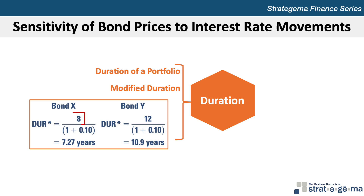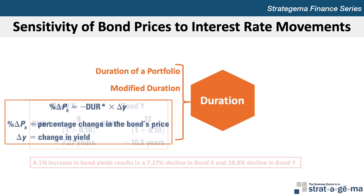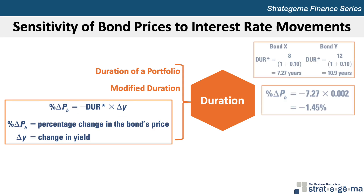For example, assume that bond X has a duration of 8 years and bond Y a duration of 12 years. Assuming the prevailing bond yield is 10%, the modified duration for bond X would be 7.27 years and 10.9 years for bond Y. According to the modified duration estimates, a 1 percentage point increase in bond yields from 10 to 11% would lead to a 7.27% decline in the price of bond X and a 10.9% decline in the price of bond Y. The percentage change in the bond's price can be expressed as the inverse of the modified duration DUR* multiplied by the percentage change in yield Y. For example, the percentage change in the price for bond X for an increase in yield of 0.2 percentage points would be negative 1.45%.